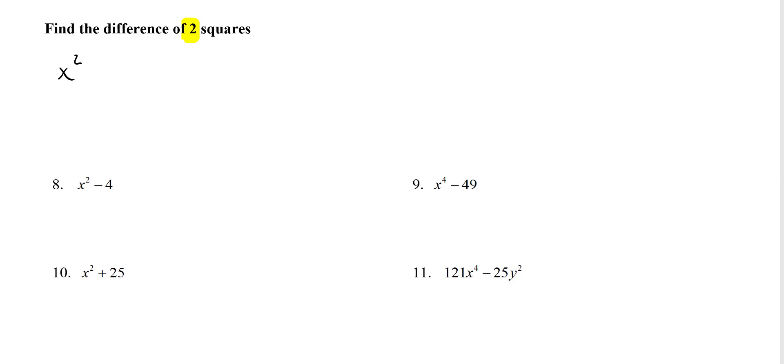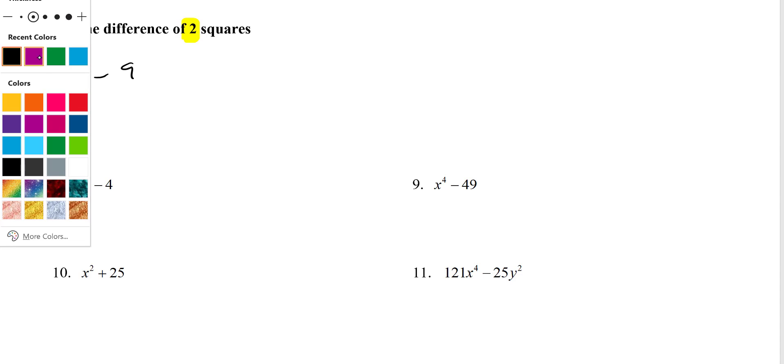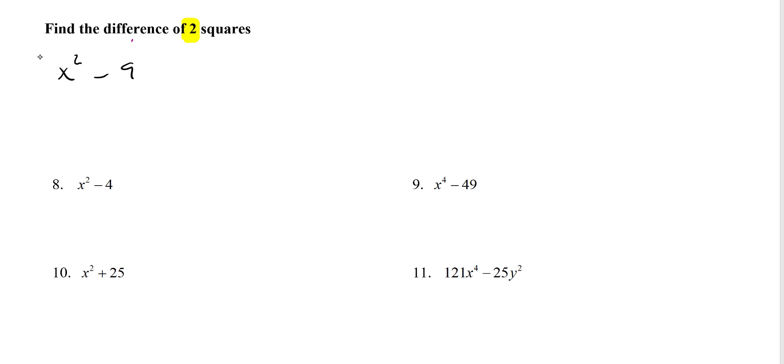If I said x squared minus 9, what I want you to do is on top of this write x, because the square root of x squared is x, and then a 3. That's all you need to do, because you're doing the square root of 9, which is 3.